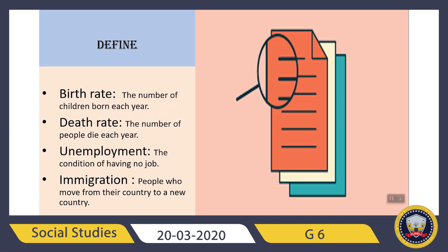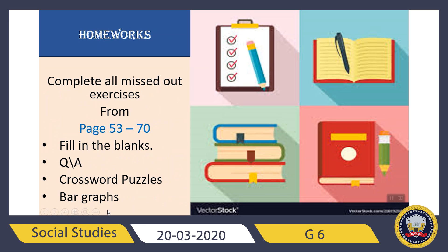A few more definitions: Birth Rate — the number of children born each year is called Birth Rate. Death Rate — the number of people who die each year is called Death Rate. Unemployment — the condition of having no job. Immigration — people who move from their country to a new country is called Immigration.